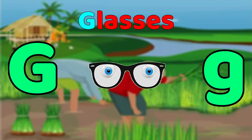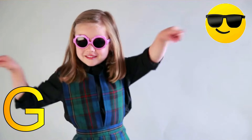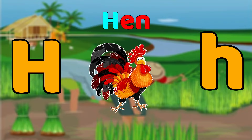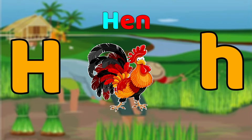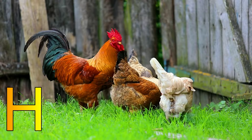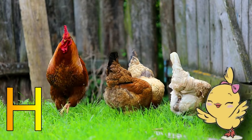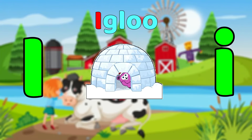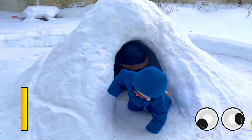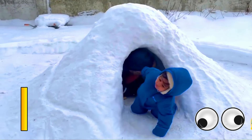G is for glasses. G, glasses. G-G-glasses. G, glasses. H is for hand. H-H-hand, H-H-hand. H, hand. I is for igloo. E-E-igloo, E-E-igloo. I, igloo.